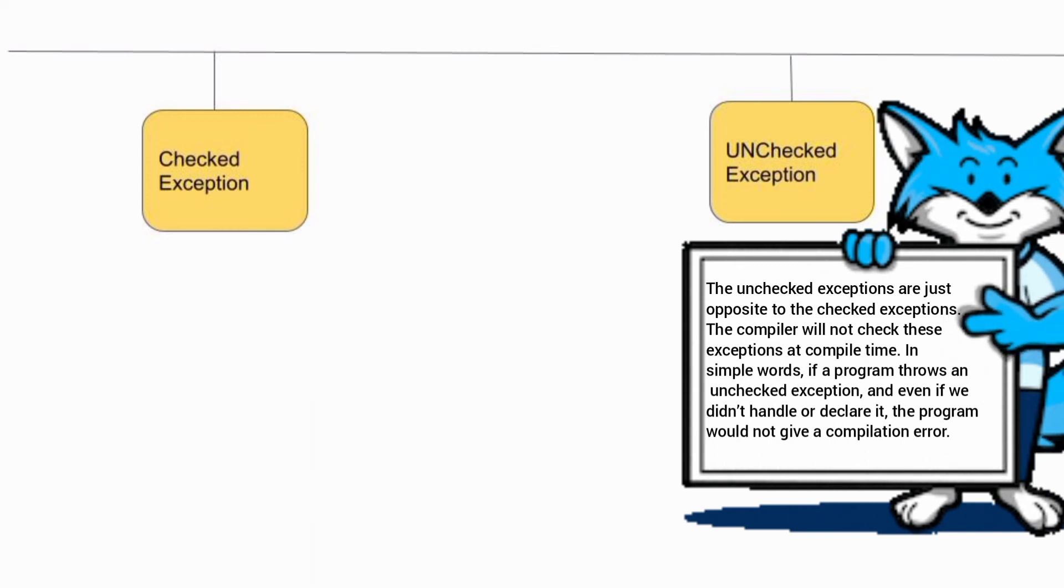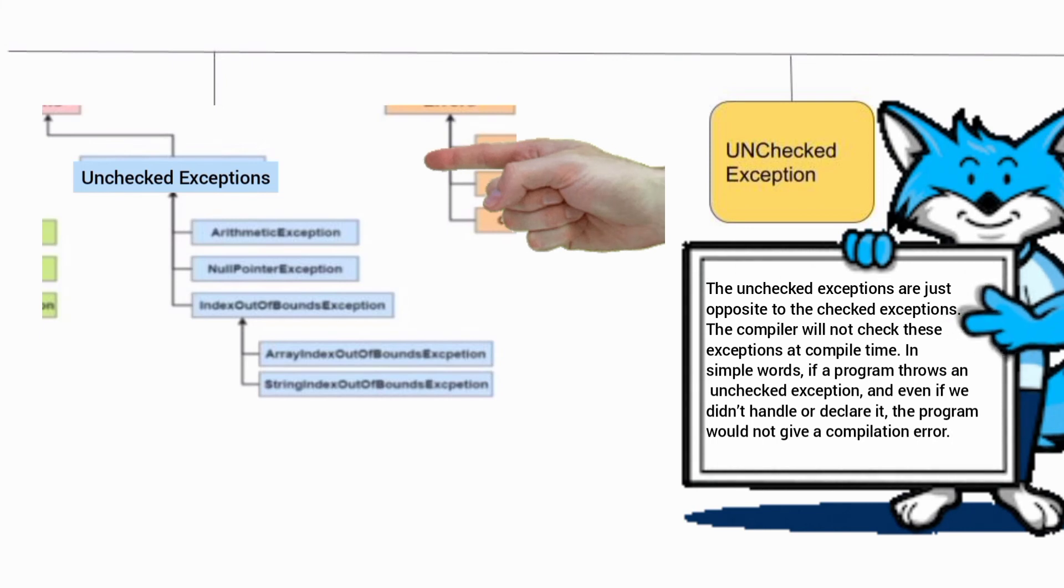For example, ArithmeticException, NullPointerException, ArrayIndexOutOfBoundsException, etc. Java compiler does not check runtime exceptions and all its exception subclasses.